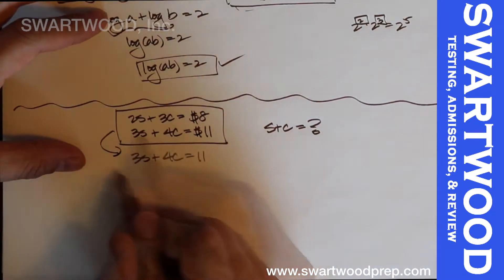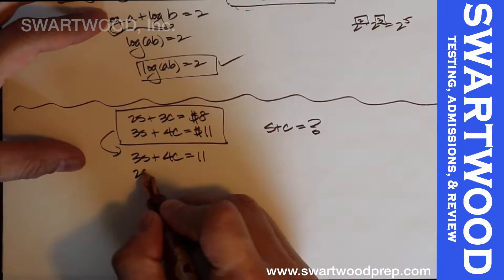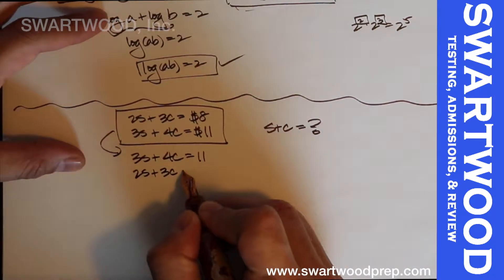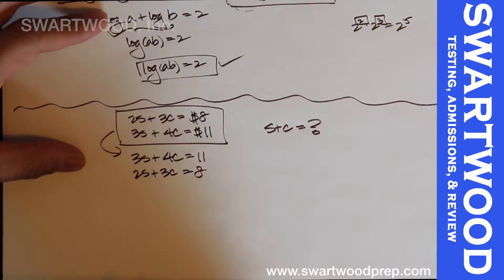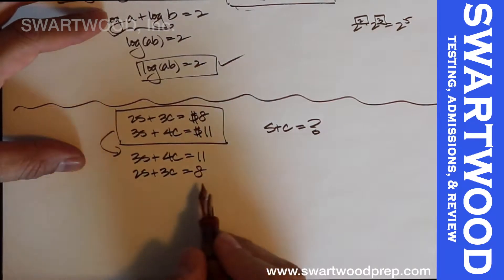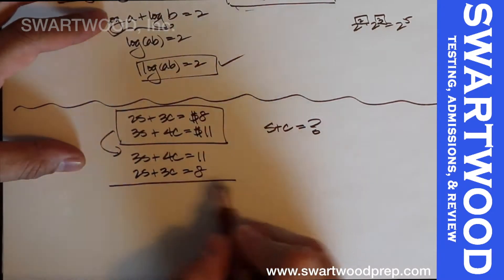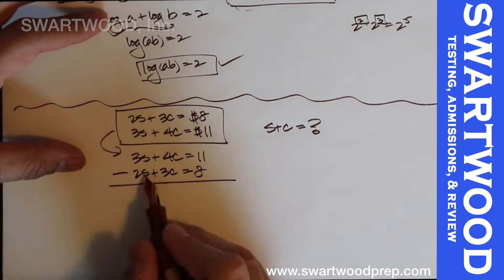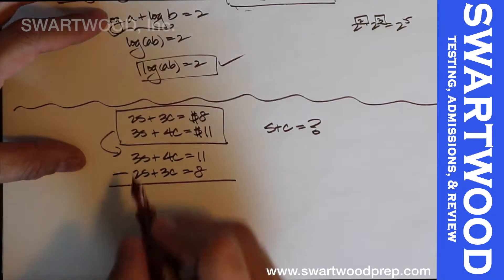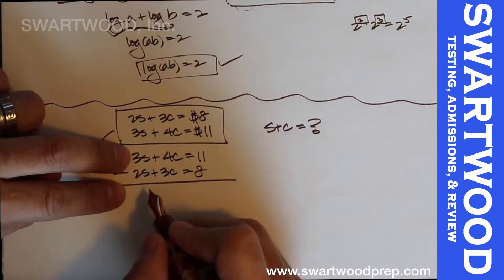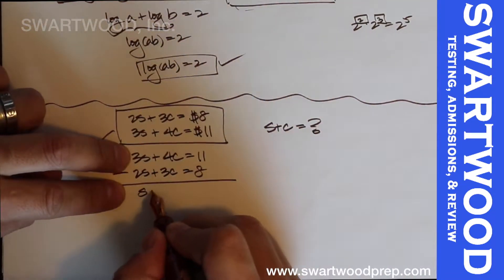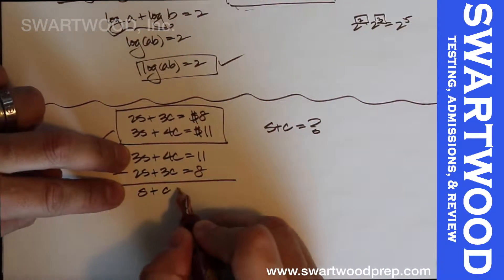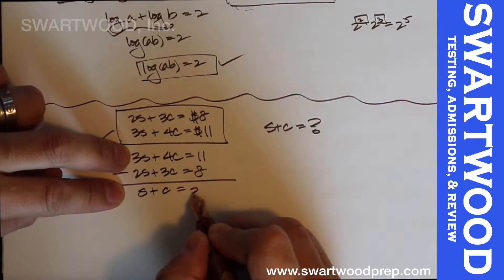So rewrite it: 3s plus 4c equals 11, and 2s plus 3c equals 8. Instead of solving each piece, subtract one equation from the other. The setup works out nicely — you get s plus c equals 3. They set this up on purpose.